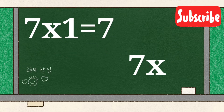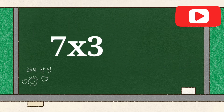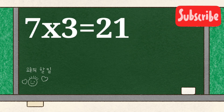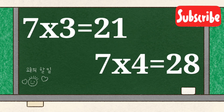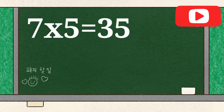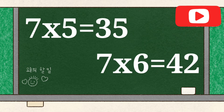7 1's are 7, 7 2's are 14, 7 3's are 21, 7 4's are 28, 7 5's are 35,